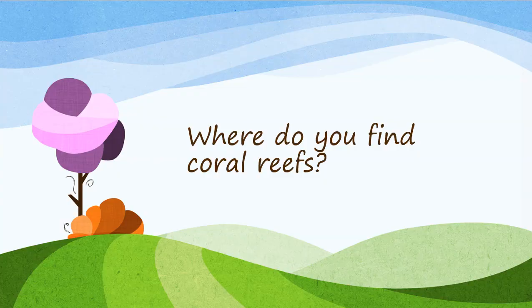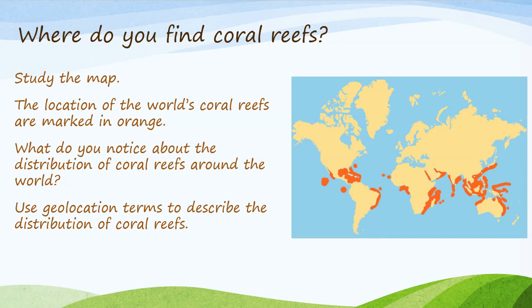So where do you find coral reefs? Study the map — the location of the world's coral reefs are marked in orange. What do you notice about the distribution of coral reefs? Use geolocation terms to describe the distribution. Spend a couple of minutes writing down some notes about where coral reefs are located in the world, using words like hemisphere, equator, and coastline to help with your description.